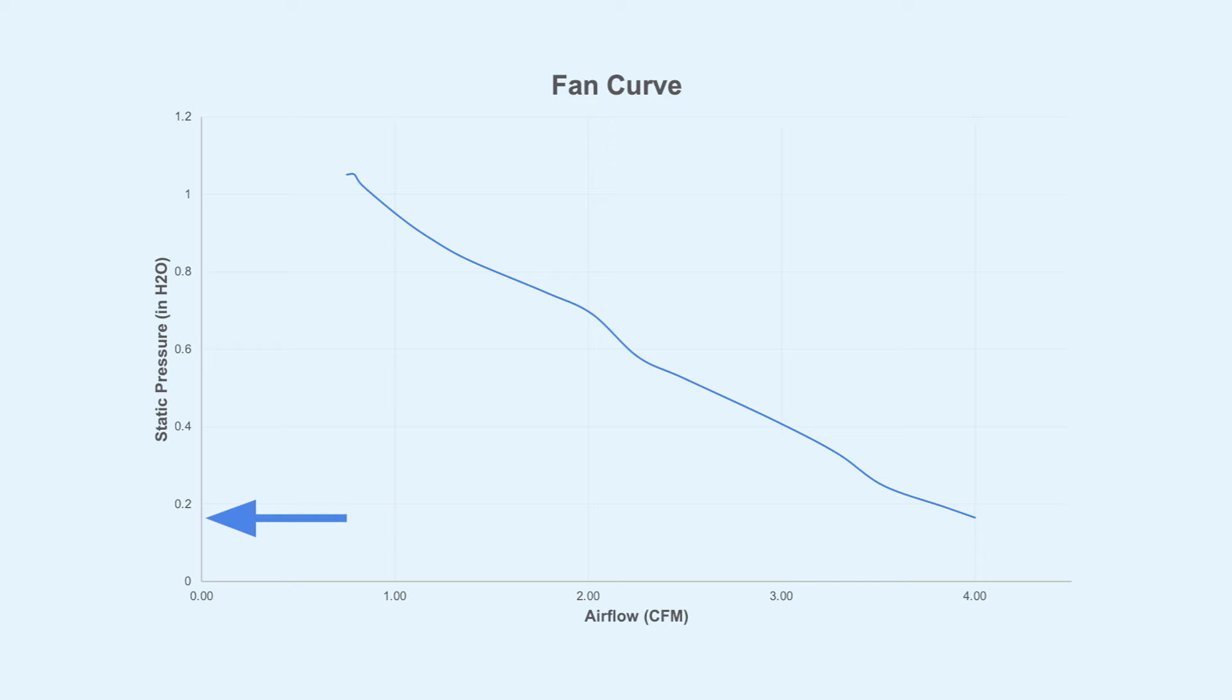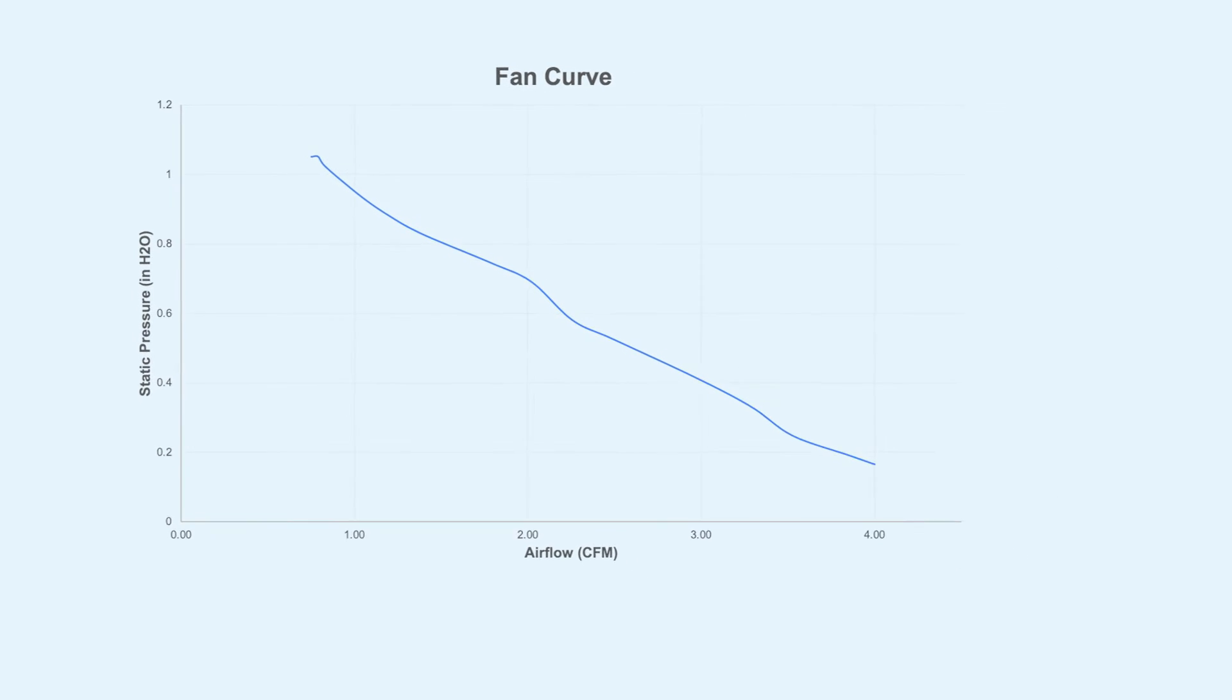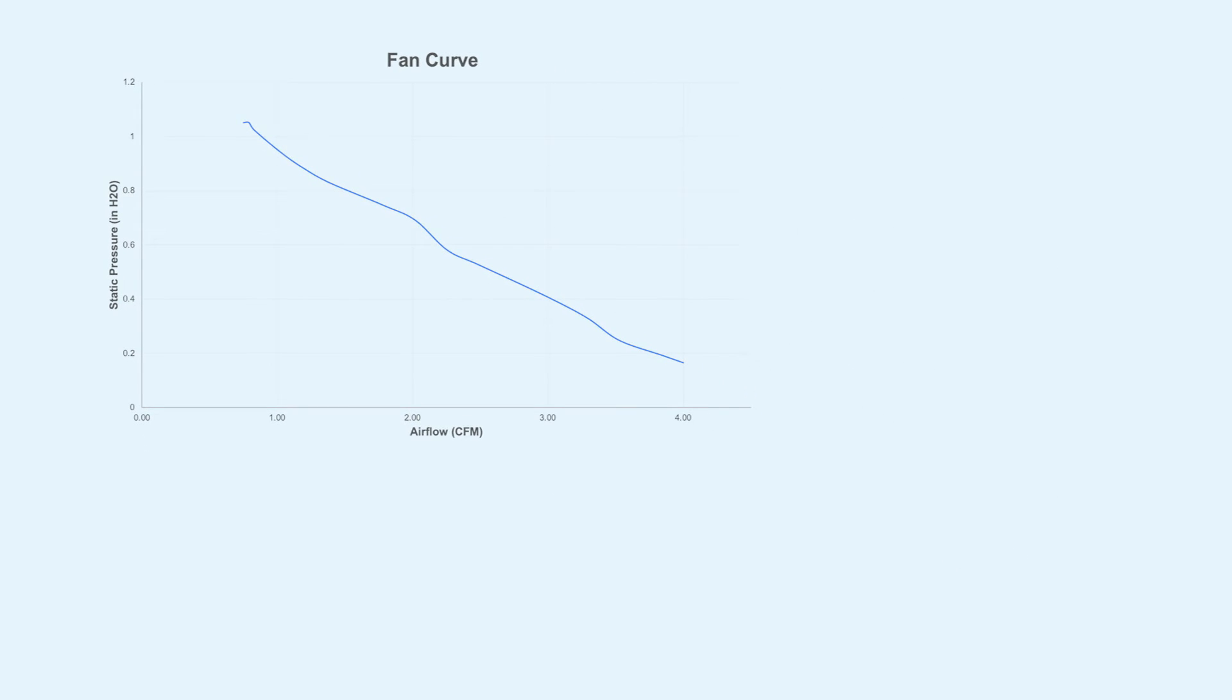And so that's where we need to go back to the fan curve to get our answer. So let's say now the resistance increased to 0.4 inches of water. How much air will the fan blow? Well according to our curve it's going to blow 3 CFM. And what if now the static pressure increased to 0.8 inches of water? Well now our airflow will decrease to 1.5 CFM.